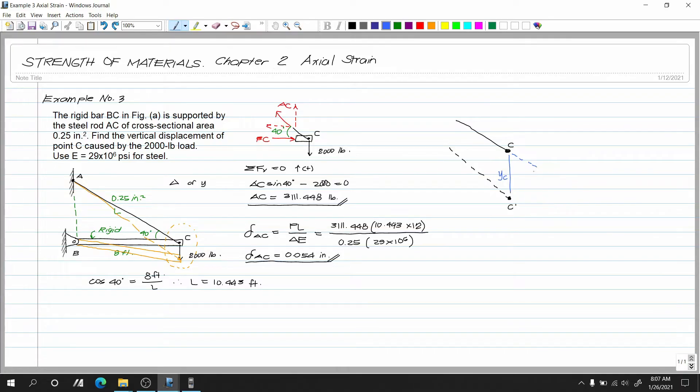So ito na yung ating elongation AC. Taba pa tayo dito ng isang line para gumawa tayo ng triangle. So meron tayong triangle dito na deformation AC tapos YC. Hindi pa tayo sure kung ano itong klaseng triangle. Then meron tayo dito na 40 degrees. So ito yung BC natin. So ito nyan is 40 degrees. Ayan. Ngayon.